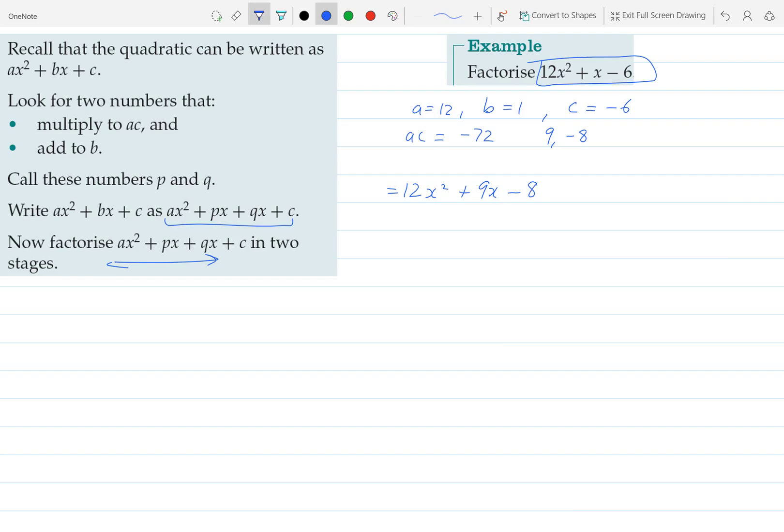Plus 9x - 8x - 6. And so writing out our factors we'll have 3x(4x + 3) minus, and we'll take out a common factor of 2 here, and then we'll have 2(4x + 3) again. So you can see that we have this 4x + 3 bracket occurring twice, so I'll write that out in the front, 4x + 3, and then in the next bracket we'll have 3x - 2.